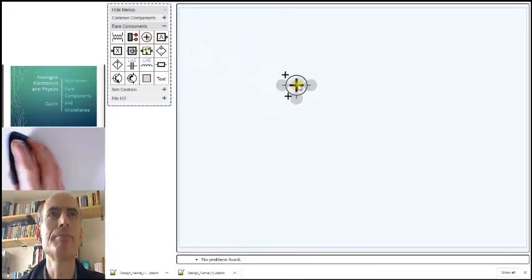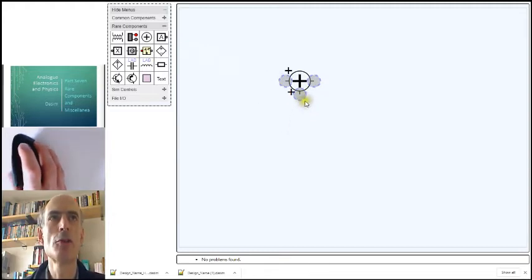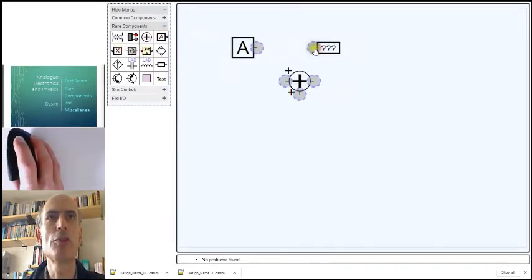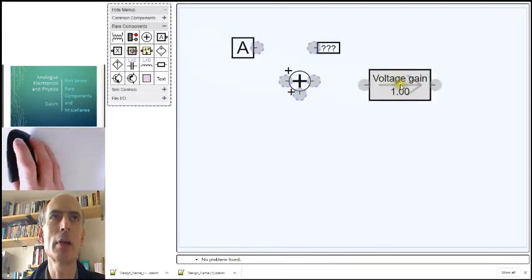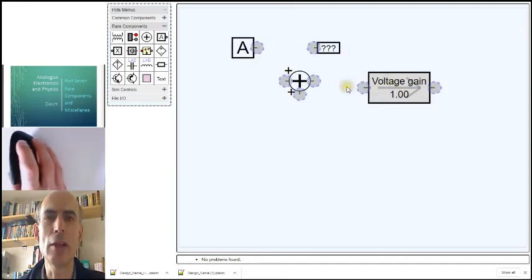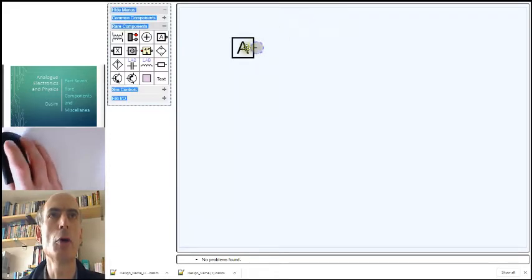This is an adder. The job is to add a signal coming in on this terminal to a signal coming in on this terminal. This one and the voltage source here and the voltage sink here and the gain block here are really only used in the quiz app to generate circuits. You wouldn't simulate a circuit with one of these, so I won't say too much more about any of these at the moment.